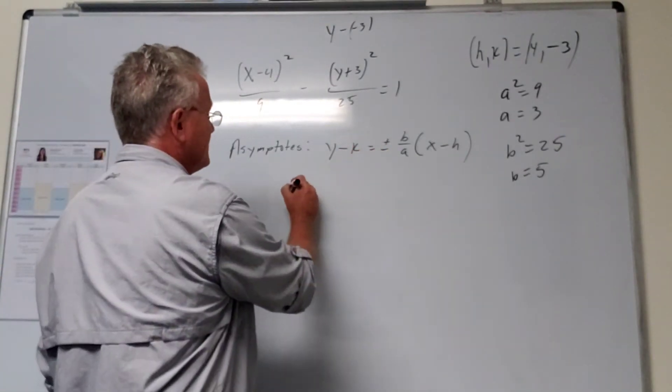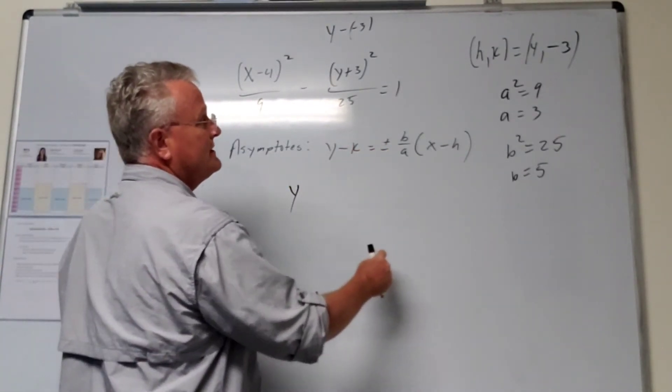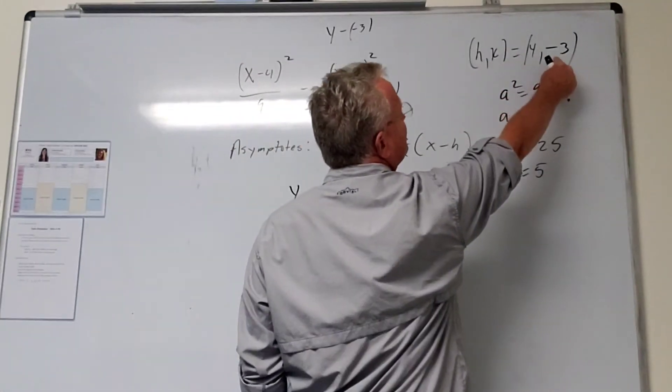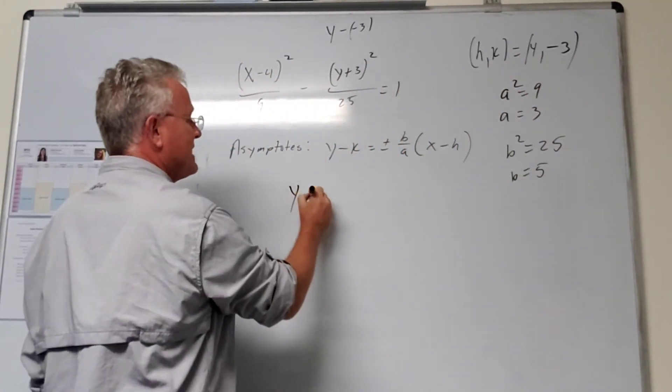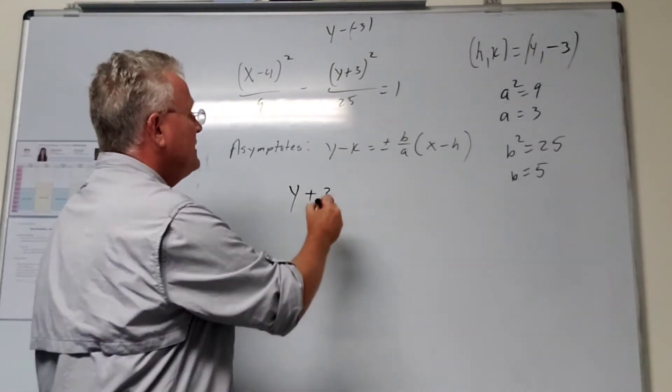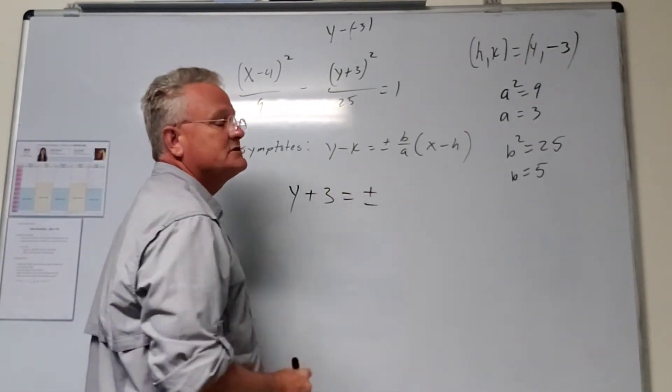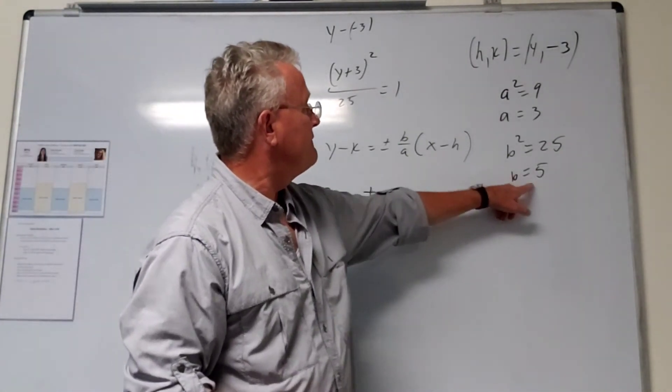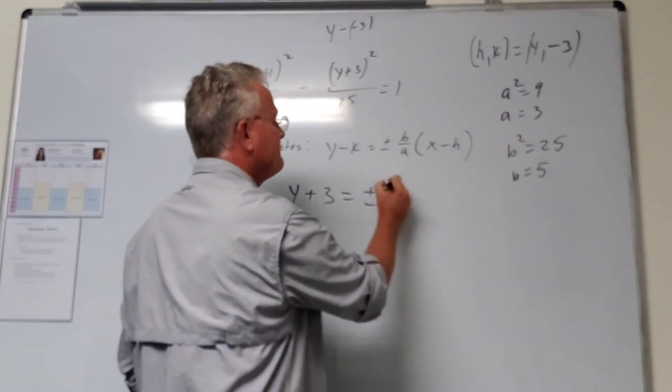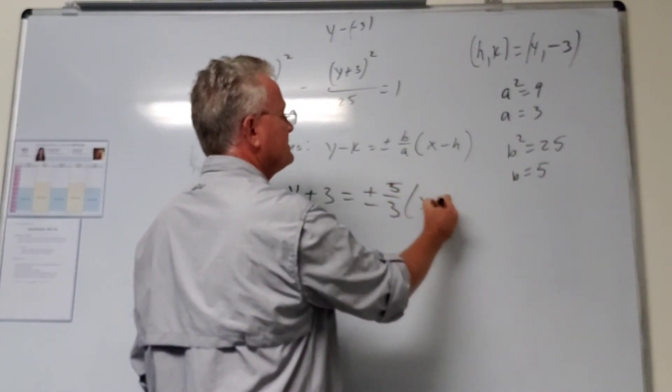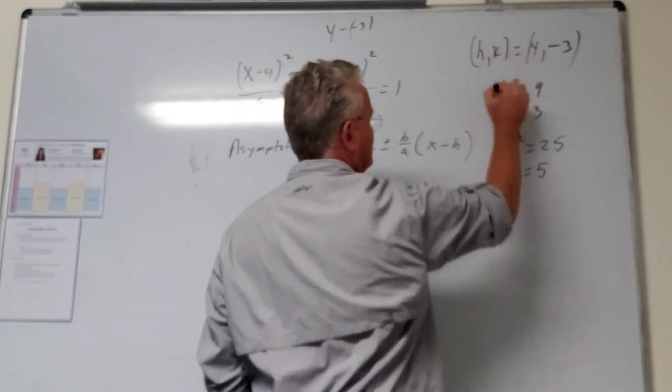So now we just plug everything in. We have y minus k - k is negative 3, so y minus a minus 3 is y plus 3. And that equals plus or minus b over a, which is 5 over 3, times x minus h, where h is 4.